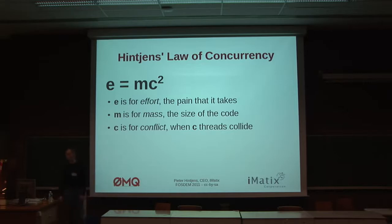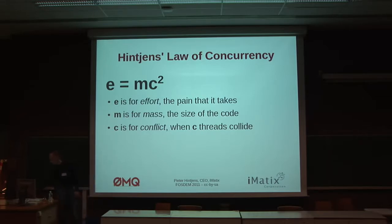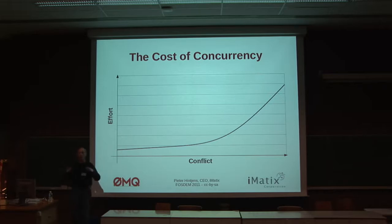Most simple systems — like a tool to do flash programming — have no conflict. It's one program doing one thing. As we build larger applications, we start having to share information in some way. The traditional way is to share data between threads. And we get this curve where the effort goes up exponentially as we get more and more work on the same data.